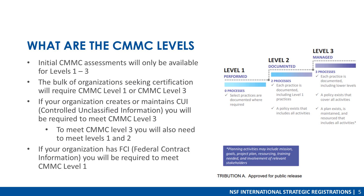What are the CMMC levels? CMMC levels will range from Levels 1 through 5, but currently only assessment levels 1 through 3 will be available. The bulk of organizations seeking certification will require CMMC Level 1 or CMMC Level 3. CMMC Level 2 is being looked at as really a stepping stone for organizations to get to CMMC Level 3 as they start to prepare their environment for the management of CUI. If your organization currently creates or maintains CUI — controlled unclassified information — you will be required to meet CMMC Level 3, which also includes Levels 1 and 2. If your organization only has FCI, or federal contract information, you'll be required to meet CMMC Level 1.